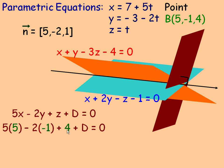and 4 in place of x, y, and z and solve for D. So that's 25, this would be plus 2, plus 4 plus D equals 0. So 25 and 2 is 27, and 4 more is 31, so D would work out to be negative 31.